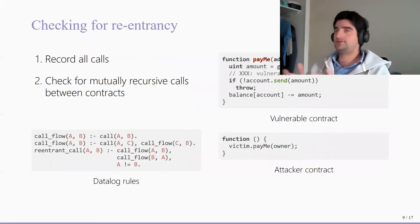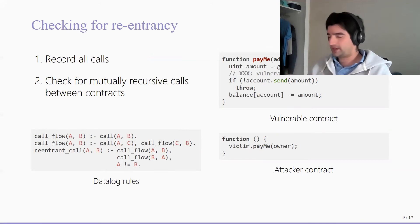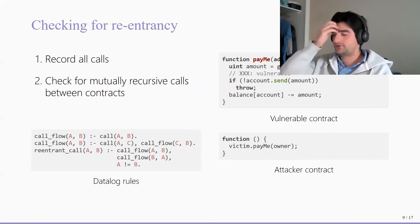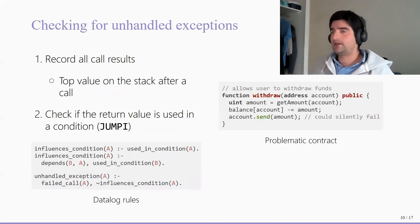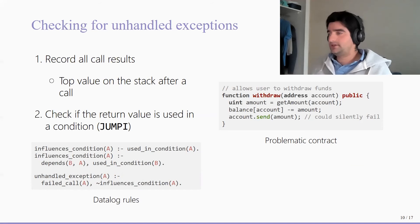To give a brief idea of what this looks like: for reentrancy, given the nature of Ethereum this will always be some sort of mutually recursive call. We simply checked for all calls whether directly or indirectly there was any case where if contract A called contract B, contract B could possibly call back into contract A. This is expressed fairly simply in Datalog. For unhandled exceptions, we first checked whether any call actually failed and if that call never influenced any condition — any exception path — then it would mean it was not checked properly, resulting in an unhandled exception.